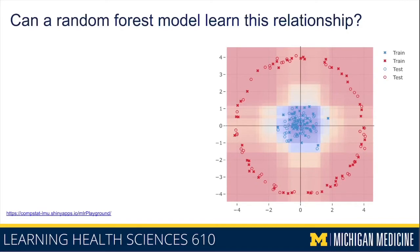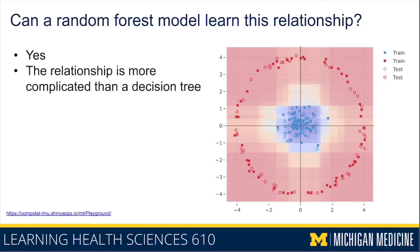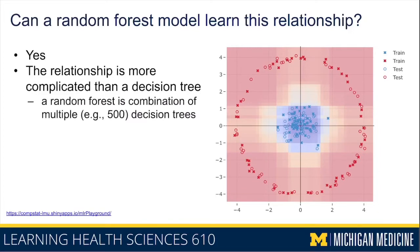What if we combine a series of decision trees? One algorithm that does this is called a random forest model. Applying it, the result resembles more of what we expected: the relationship is more complex than a single decision tree, not just a straight box, and the area of uncertainty is more round and evenly spread along the circle. This example uses 500 decision trees combined into a random forest.